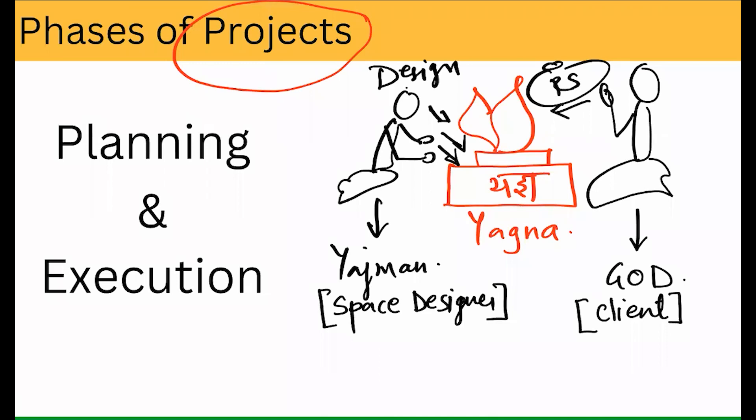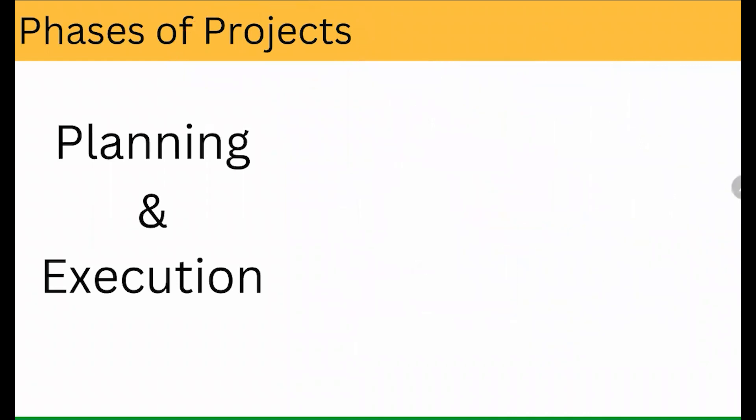अभी क्या होता है — ये भगवान बार-बार plan बदलते रहते हैं, खुश नहीं होते. कभी बोलेंगे budget इतना है, कभी बोलेंगे मुझे इस time पे चाहिए, कभी बोलेंगे आज इतना design कर दो, फिर और एक मंजिल ऊपर चढ़ा दो. तो यजमान का काम होता है — जो भी भगवान की requirement है उसको पूरा करना. तो आशीर्वाद लक्ष्मी के रूप में, धन के रूप में तभी मिलेगा, जब आपके भगवान आपसे खुश होंगे. तो इसी concept पे phases of the project मैं आपको समझा रहा हूँ.